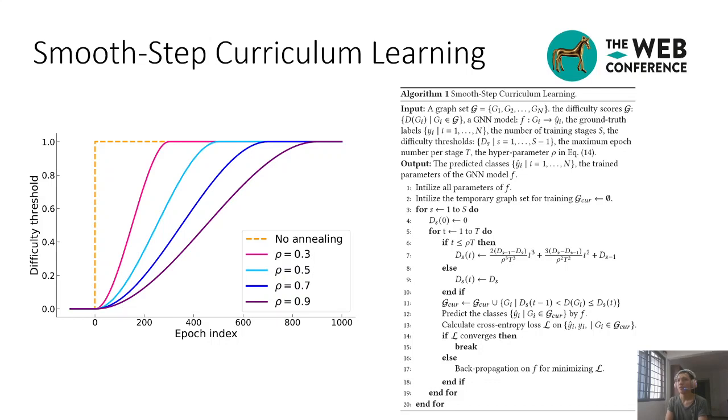We visualize our smooth step difficulty threshold function in this figure. We note that variants of the smooth step function are popular in computer graphics. However, to the best of our knowledge, the smooth step function has not been used in graph neural networks or curriculum learning.